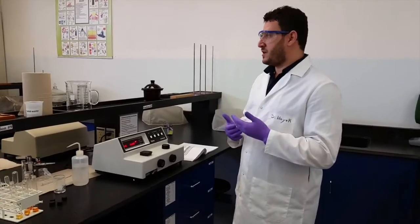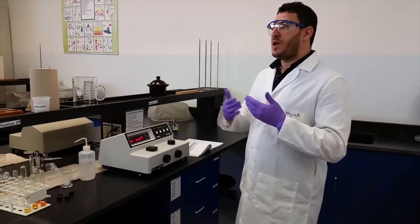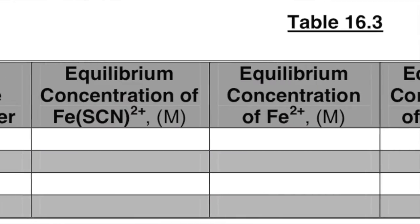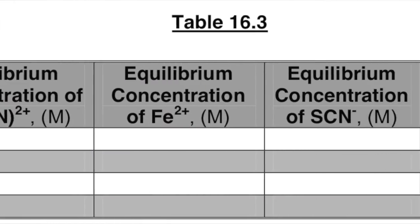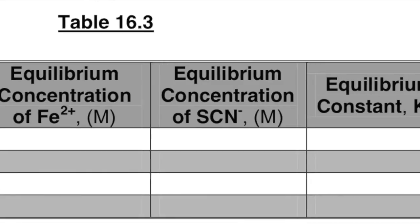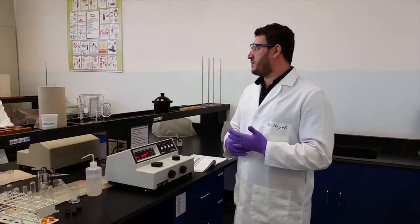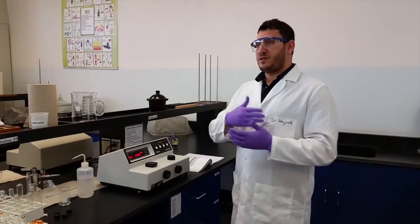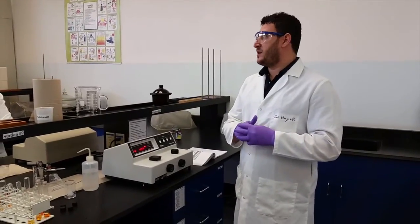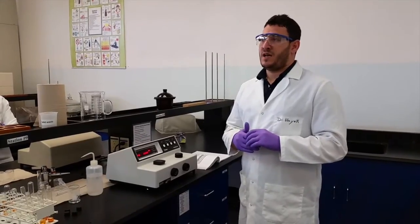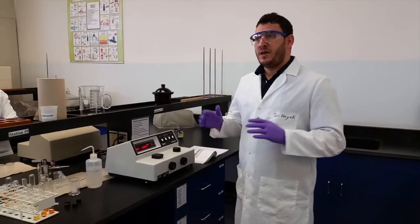You have these concentrations. They will allow you to calculate four different values of the equilibrium constant. For the overall, you can take the average of four values, the sum divided by four, and you obtain the equilibrium constant value.